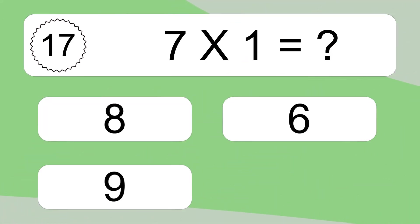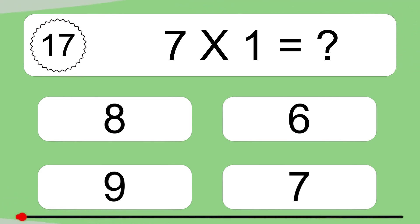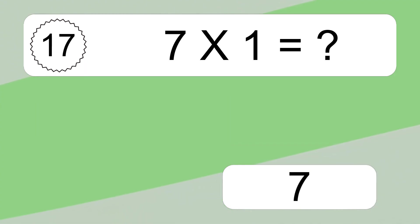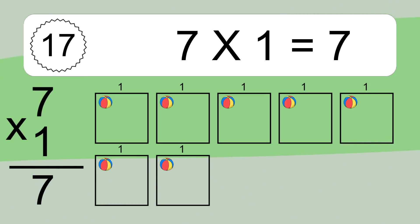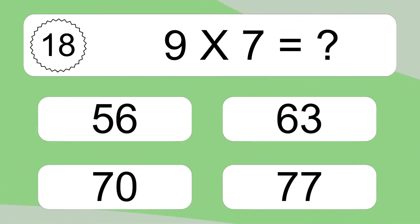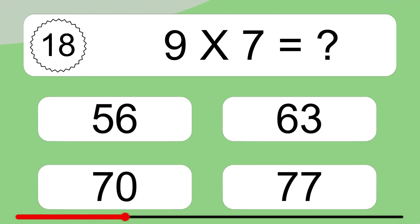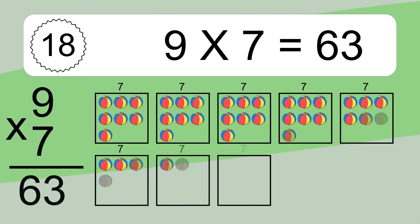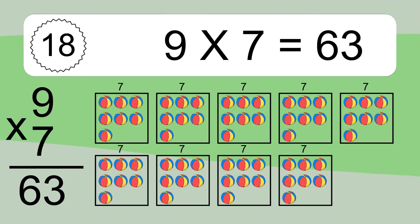Seven times one equals what? Seven times one equals seven. We have seven boxes, and each box has one colorful ball inside. If you count all the balls in all the boxes together, you will have seven times one balls. This equals seven balls. Nine times seven equals what? Nine times seven equals 63. We have nine boxes, and each box has seven colorful balls inside. If you count all the balls together, you will have nine times seven balls. This equals 63 balls.